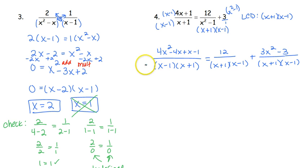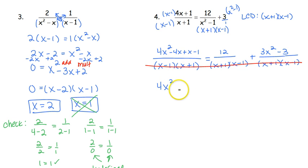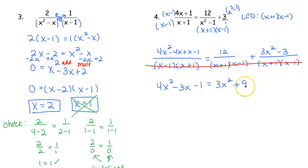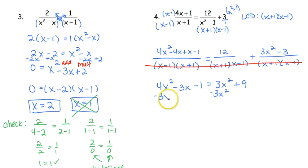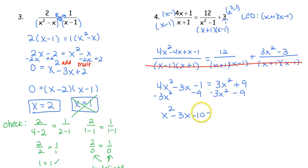For the third piece, 3 times x squared is 3x squared and 3 times negative 1 is negative 3. Now that we have the same denominator, we cross it out. On the left, combining like terms: 4x squared, negative 4 plus positive 1 gives negative 3x minus 1. On the right: 3x squared and 12 minus 3 is 9. Moving 3x squared to the left and the 9 over gives us x squared minus 3x minus 10 equals 0.